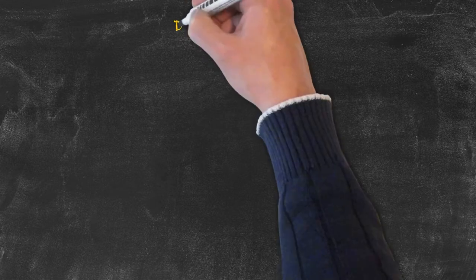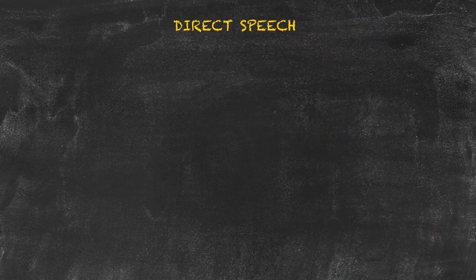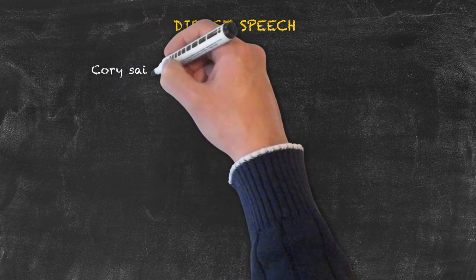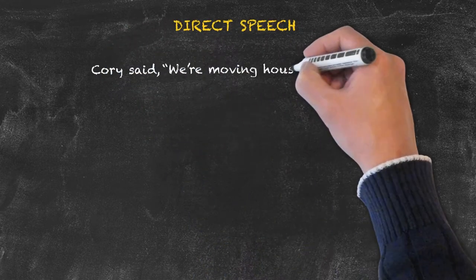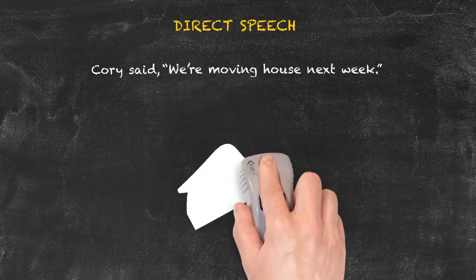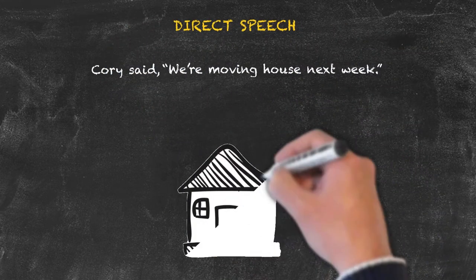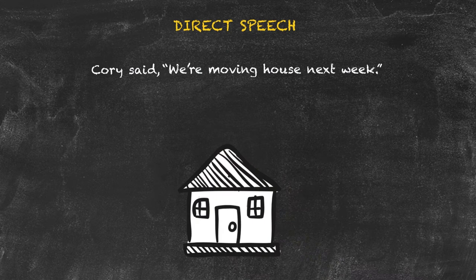In English, we often have a need to quote people. We can do so through what's called direct speech. In written form, it would look like: Corey said, 'we're moving house next week.' I've used quotes, and I've quoted him directly — the words that he used.